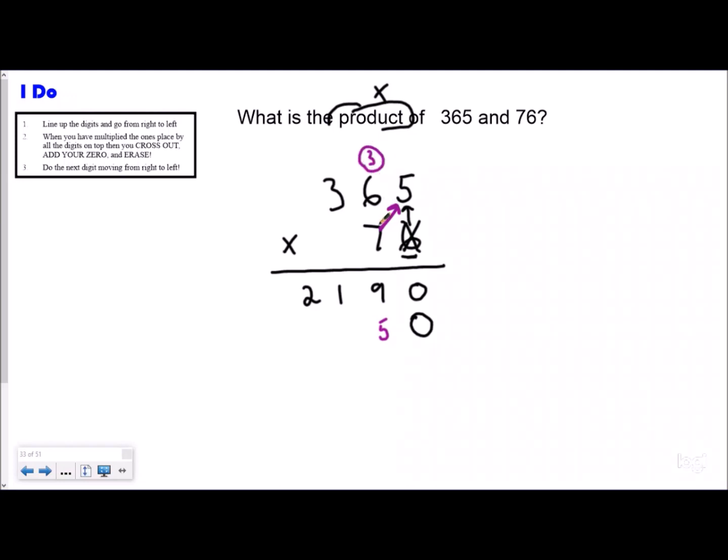Now I multiply then add. Seven times six is 42 plus three is 45, very helpful to know your basic facts. I'm going to regroup my four and circle it. Seven times three is 21 plus four is 25.